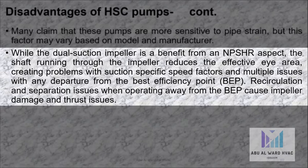While the dual suction impeller is a benefit from an NPSHr aspect, the shaft running through the impeller reduces the effective eye area, creating problems with suction specific speed factors and multiple issues with any departure from the best efficiency point (BEP). Recirculation and separation issues when operating away from the BEP cause impeller damage and thrust issues.